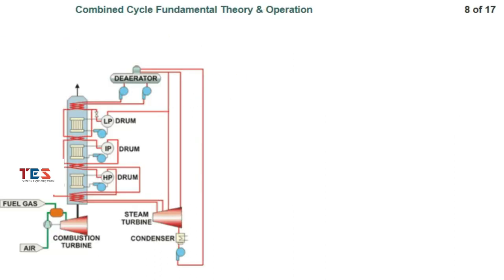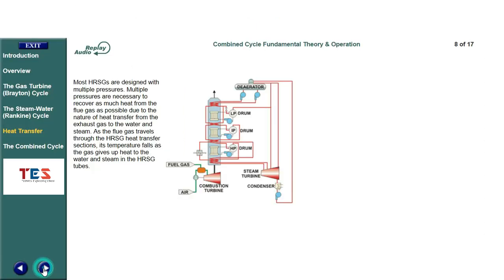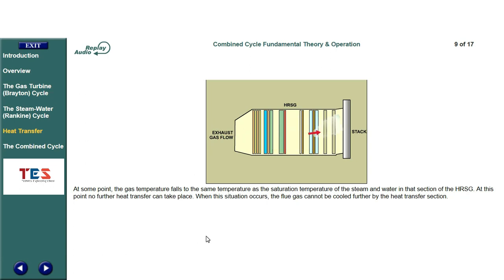Most HRSGs are designed with multiple pressures. Multiple pressures are necessary to recover as much heat from the flue gas as possible. As the flue gas travels through the HRSG heat transfer sections, its temperature falls as the gas gives up heat to the water and steam in the HRSG tubes. At some point, the gas temperature falls to the same temperature as the saturation temperature of the steam and water in that section of the HRSG. At this point, no further heat transfer can take place, and the flue gas cannot be cooled further by that heat transfer section.